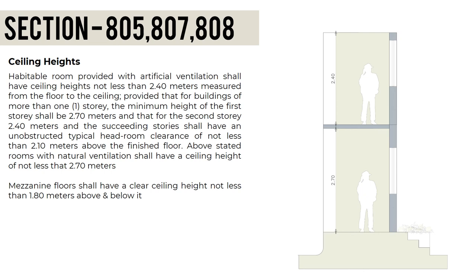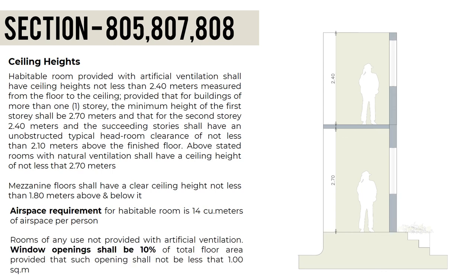Mezzanine floors shall have a clear ceiling height of not less than 1.8 meters above and below. The airspace requirement for habitable rooms is 14 cubic meters of airspace per person. Rooms not provided with artificial ventilation shall have window openings of at least 10% of the total floor area, but not less than 1 square meter.